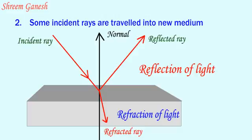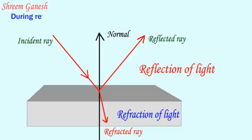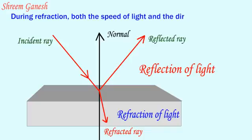The rays which travel in new medium are known as refracted rays. During refraction, both the speed of light and the direction of path of light are changed.